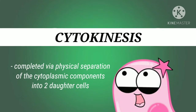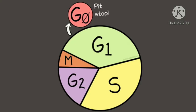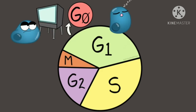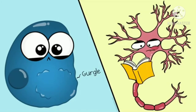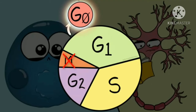Not all cells adhere to the classic cell cycle pattern in which a newly formed daughter cell immediately enters the preparatory phases of interphase followed by the mitotic phase. Cells in G0 phase are not actively preparing to divide; the cell is in a quiescent stage that occurs when cells exit the cell cycle. Some cells enter G0 temporarily until an external signal triggers the onset of G1, while other cells that never or rarely divide, such as mature cardiac muscle and nerve cells, remain in G0 permanently.